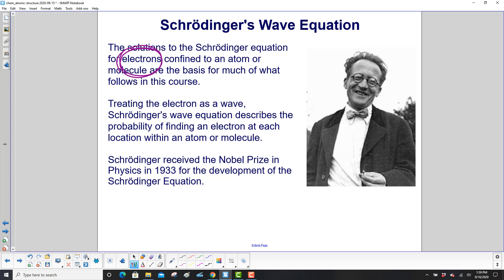Treating the electron as a wave, the wave equation describes the probability of finding an electron at each location within an atom or molecule. Schrödinger received the Nobel Prize in Physics in 1933 for the development of his equation.